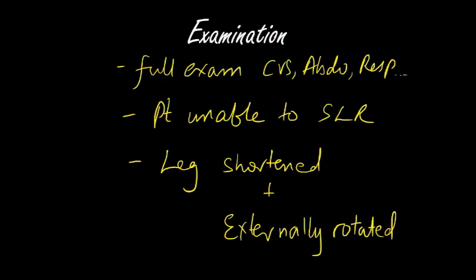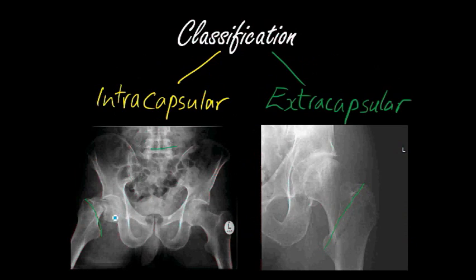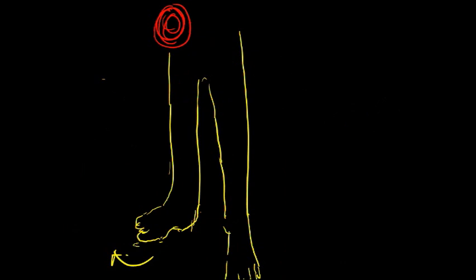Next you want to do a full examination of the patient, including cardiovascular, abdominal, respiratory, and neurological examination. A few things to look out for in a patient with a hip fracture: the patient will probably not be able to perform a straight leg raise (SLR) because of pain. The other thing you'll notice is that the affected leg will be shortened and externally rotated — if we look at this slide, you can see the lesser trochanter has moved up and the function of the opposing muscles has caused the leg to rotate. So when examining, make sure you mention that the leg is shortened and externally rotated.